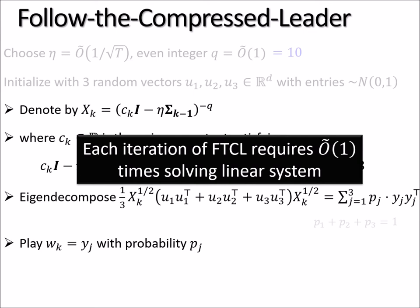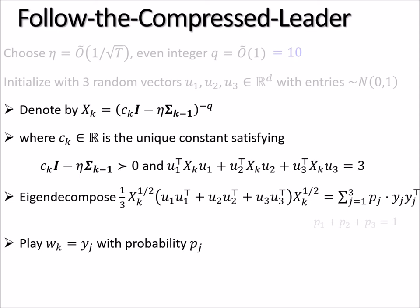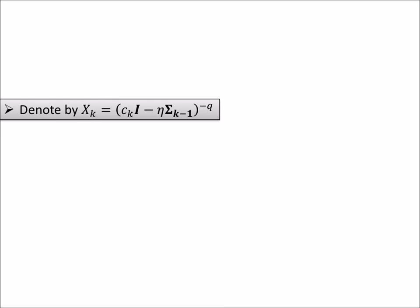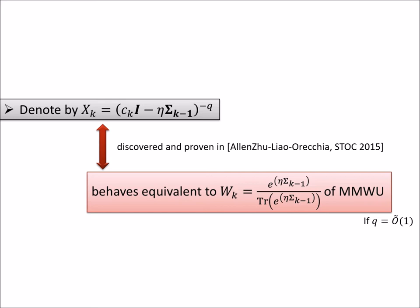But next, why does it have low regret? Let us focus on this new matrix X for a moment. I claim without proof that this new matrix X, in fact, behaves very similarly to the matrix W_k from matrix multiplicative weight update. So this can be made very precise. It was actually already in our prior work published in STOC two years ago. But from this high level talk, let me just give you one example.